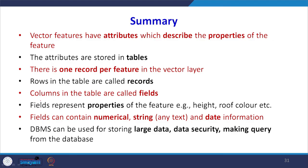To summarize: vector features have attributes that describe the properties of features. Attributes are stored in attribute tables with one record per feature in the vector layer. Rows are called records and columns are called fields, which represent various properties of the feature — height, color, pH value, temperature, and so on. Fields can contain numerical, string, or text data. DBMS is very useful for storing large data, ensuring data security, and making queries from datasets. All these functionalities can be performed once we have a proper DBMS.